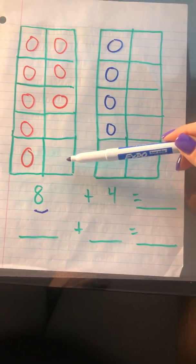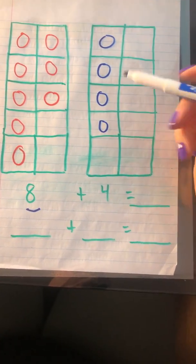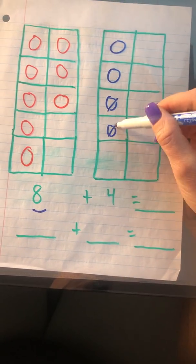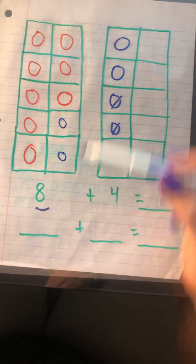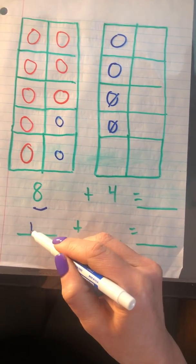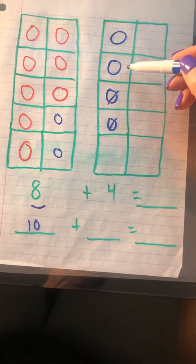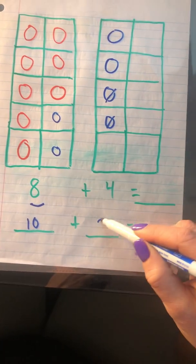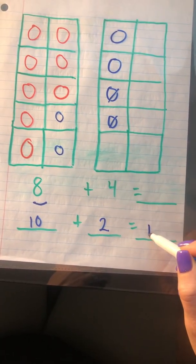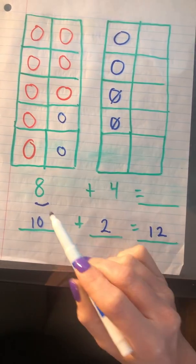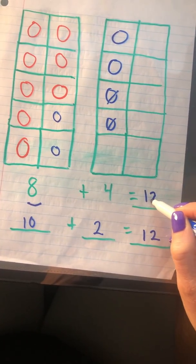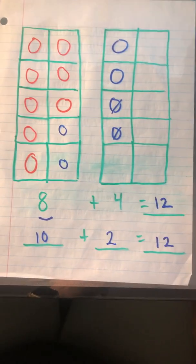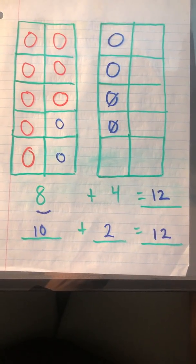So now I need to make my friendly 10. I can see very easily there's two empty boxes, so I need to borrow two and draw them over here. So now that I have a friendly 10, I can easily see 10 plus I have two left over here equals 12. So then now I know 8 plus 4 is also 12. So that is our making 10 strategy.